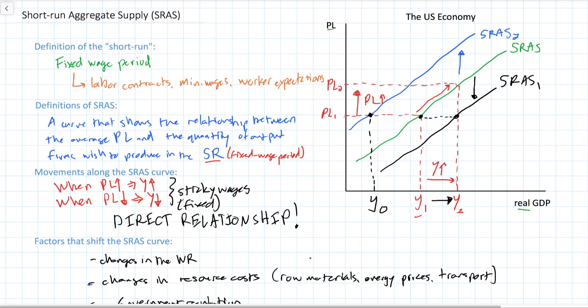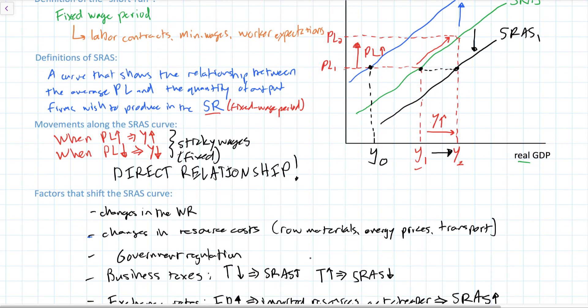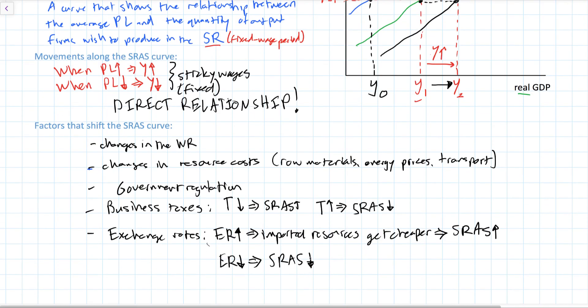In this video we defined the short-run as the fixed wage period — the period over which wages workers get paid are fixed because of labor contracts and government interventions such as minimum wages and unemployment benefits. The short-run aggregate supply shows a direct relationship between the average price level and the quantity of output supplied. Factors that shift the SRAS curve include changes in the wage rate, changes in resource costs, the level of government regulation, the level of business taxation, and the exchange rate — particularly in countries that import a lot of raw materials.